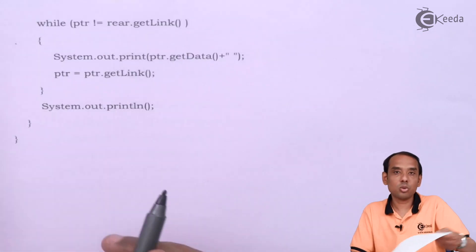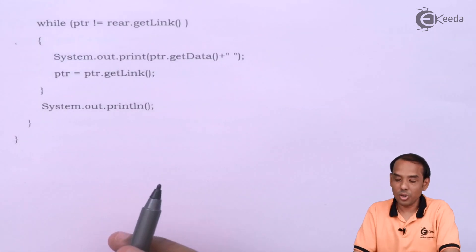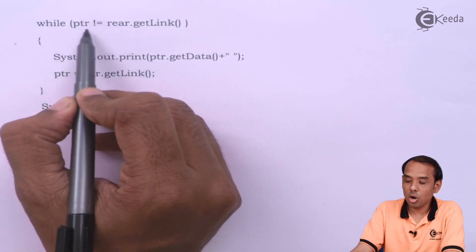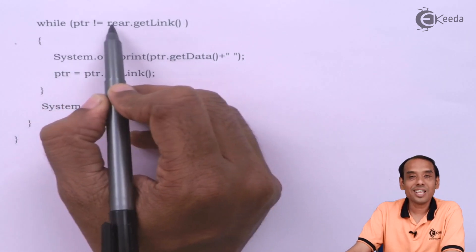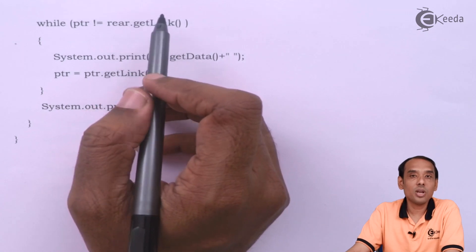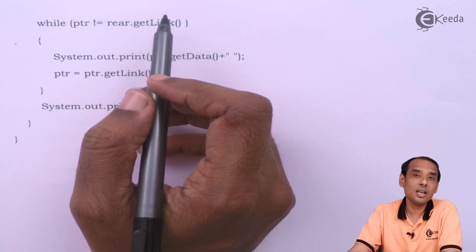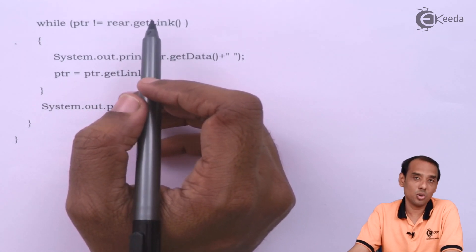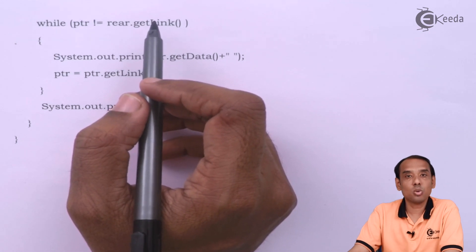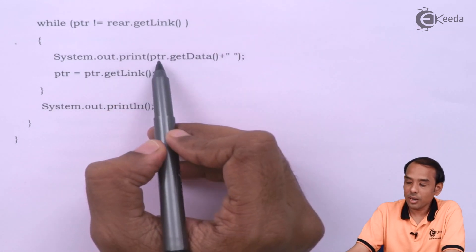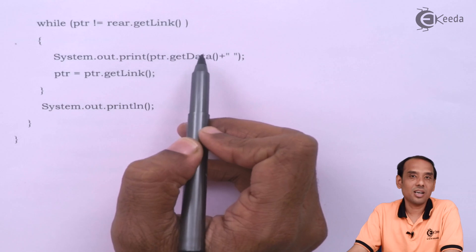How do I iterate? While pointer not equal to rear.getLink. So it means rear is there, there are no null values. So until I go to the last element of the queue, I am going to iterate through the queue. In that case, I am going to get ptr.getData.